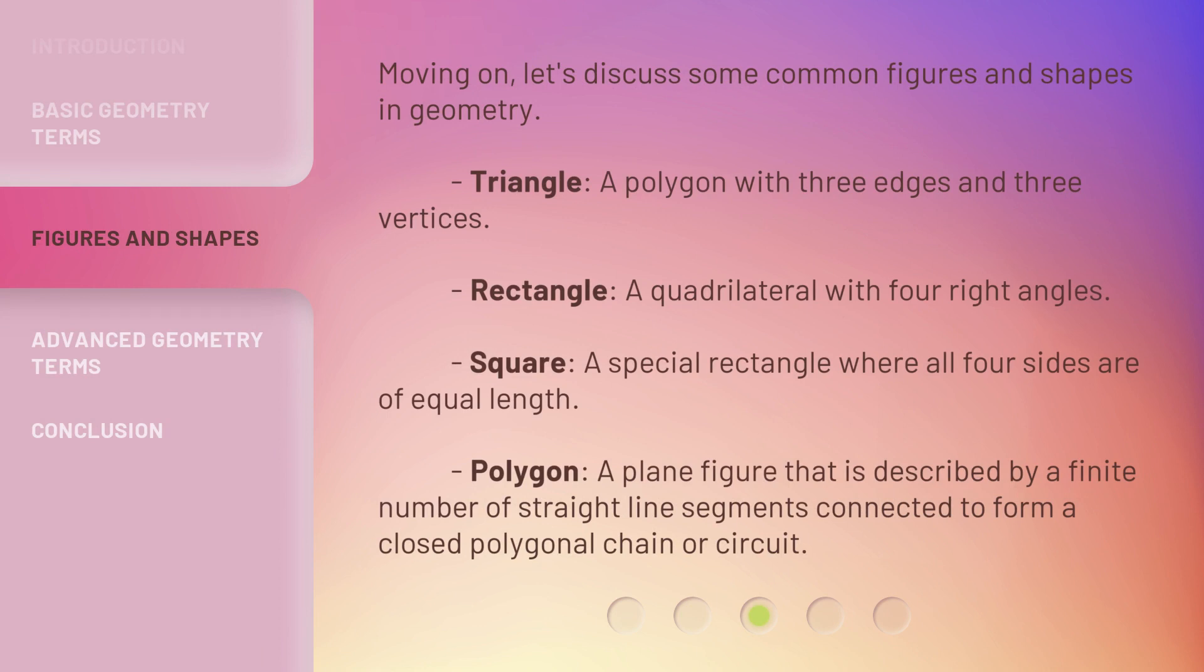Triangle: A polygon with three edges and three vertices. Rectangle: A quadrilateral with four right angles. Square: A special rectangle where all four sides are of equal length. Polygon: A plane figure that is described by a finite number of straight line segments connected to form a closed polygonal chain or circuit.